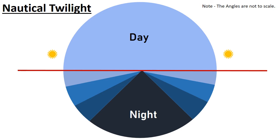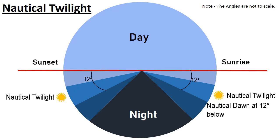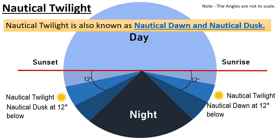Now we are talking about nautical twilight. Nautical twilight happens when the sun is less than 12 degrees below the horizon. Nautical dawn is the moment when the center of the sun is 12 degrees below the horizon in the morning, and nautical dusk is the equivalent in the evening. Nautical twilight is less bright than civil twilight and artificial light is generally required for outdoor activities.